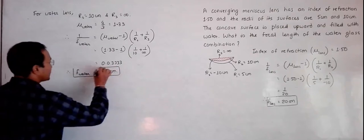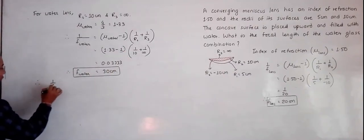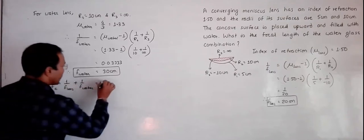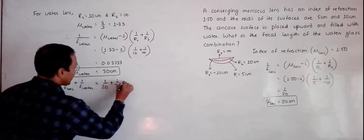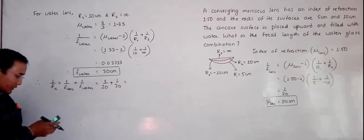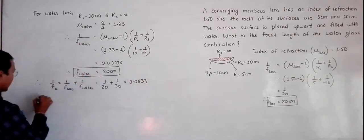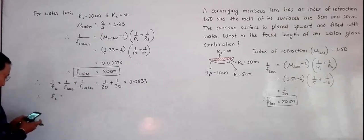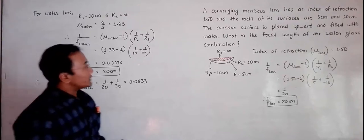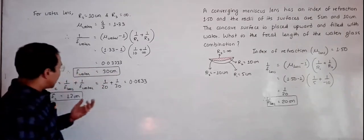Now to calculate the focal length of the combination: 1 over f_combination equals 1/f_lens plus 1/f_water, which equals 1/20 plus 1/30. Calculating this gives 0.0833, so f_combination equals 12 centimeters. The focal length of the combination lens is 12 centimeters. This lens is a convex lens because the sign is positive — had it been concave we would get a negative sign.